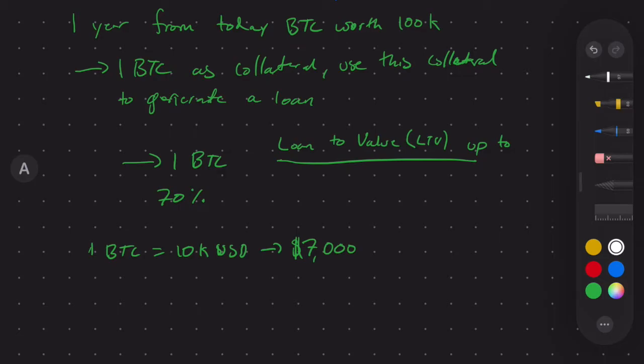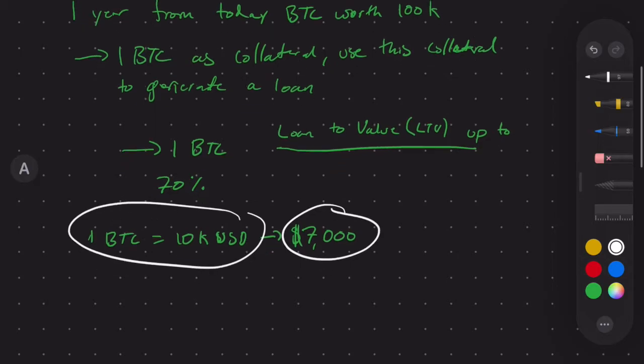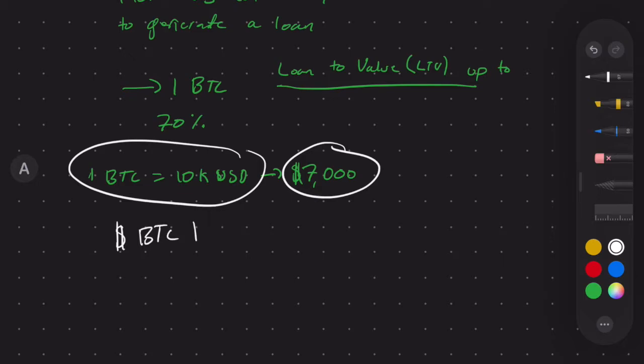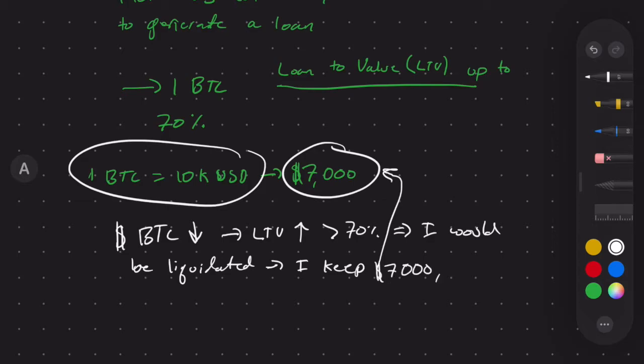Let's talk about what happens here if I do this. Now I still own this one Bitcoin, but I also have $7,000 that I could essentially loan out. Now, the one thing to call out is since this is collateral, if the price of BTC goes down and I have $7,000 lended, this makes my loan to value ratio increase above 70%, which implies that I would be liquidated. And that means that I keep the loan amount right here, so I keep $7,000.